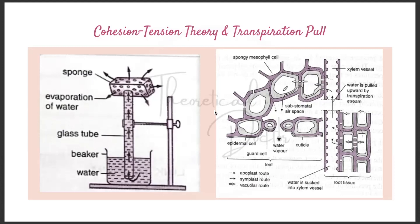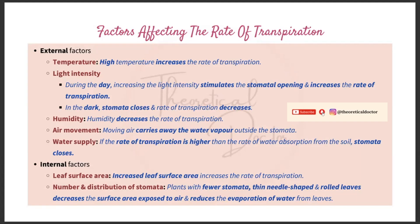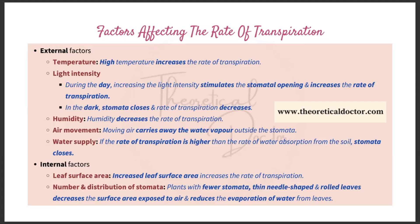There are external and internal factors affecting the rate of transpiration. The first external factor is temperature: high temperature increases the rate of transpiration because it increases the kinetic energy and movement of water molecules, so they move out through the stomata more quickly. High temperature also reduces the humidity of the air and increases the rate of diffusion of water vapor from the leaves. Low temperature reduces the rate of transpiration as the process is reversed.